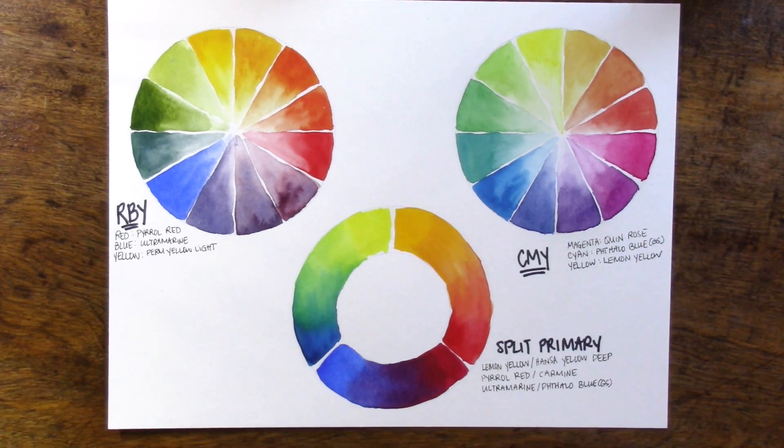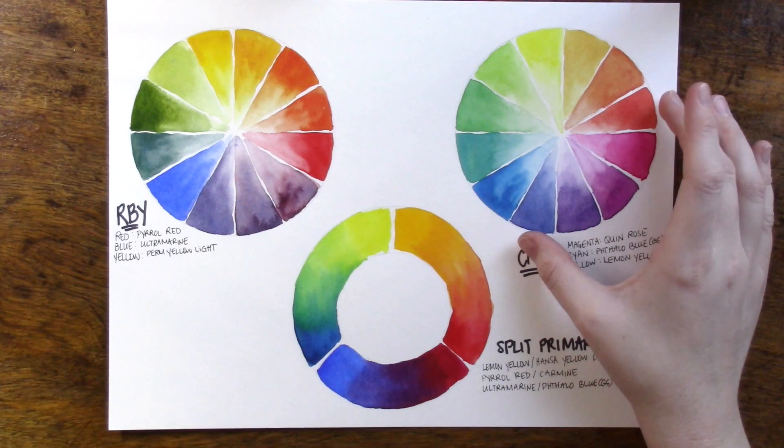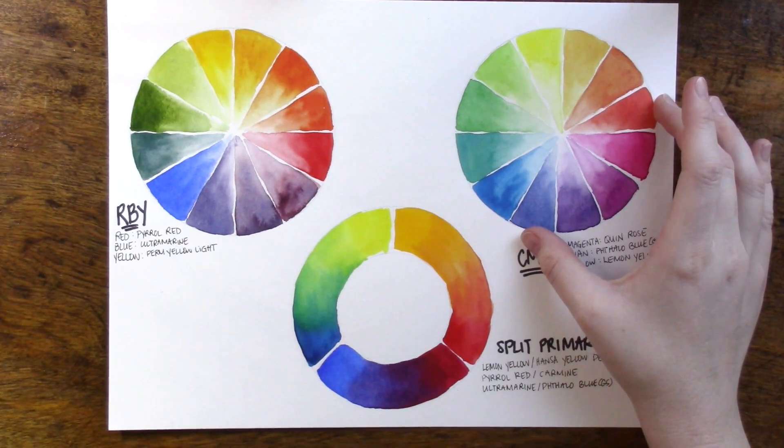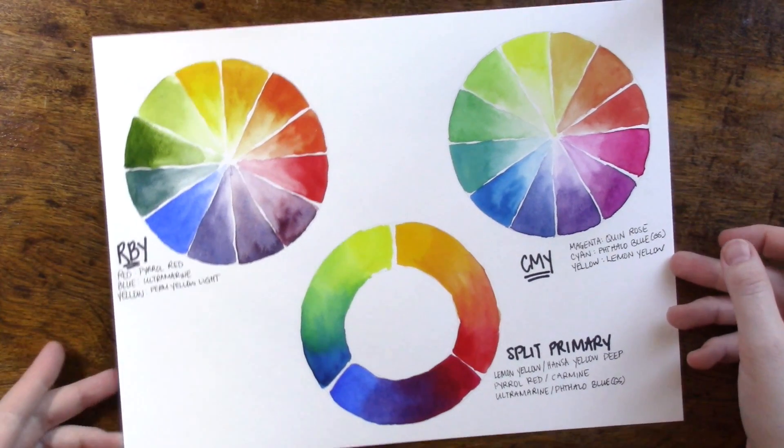I do want us to take special note of two of the positions within the cyan, magenta, yellow color wheel, and that is the position that would typically be the red-orange and the blue-violet locations. Do you have this image in your head?